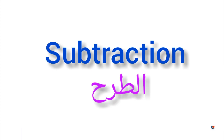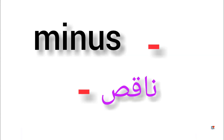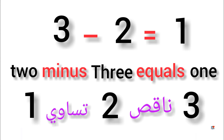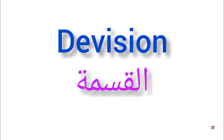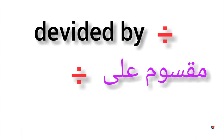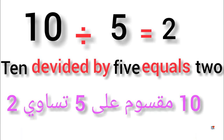Subtraction. Division. Divided by. 10 divided by 5 equals 2.